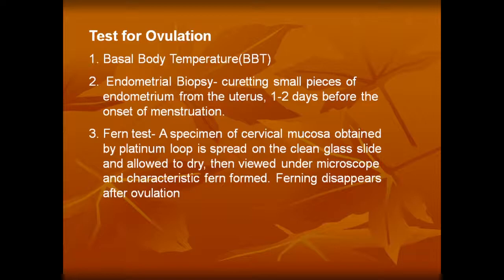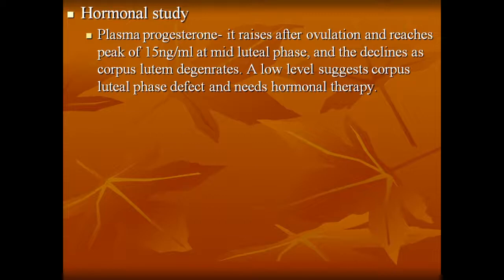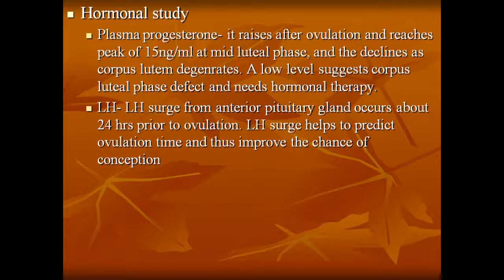Ferning disappears after ovulation. Ultrasound and hormonal studies are also used. Hormonal studies in female infertility: plasma progesterone rises after ovulation and reaches a peak of 15 nanogram per ml at the mid-luteal phase and declines as the corpus luteum degenerates. A low level suggests corpus luteal phase defect and needs hormonal therapy. Luteinizing hormone surge from the anterior pituitary gland occurs about 24 hours prior to ovulation and helps predict ovulation time, improving the chance of conception.